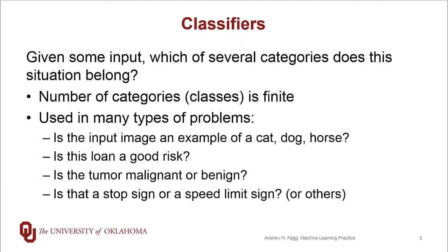Fundamentally, what classifiers are about is taking some sort of an input and determining which of several categories that this particular input belongs to. The number of categories is always finite, and typically we know the total number of categories ahead of time. This type of model shows up in lots of different situations.